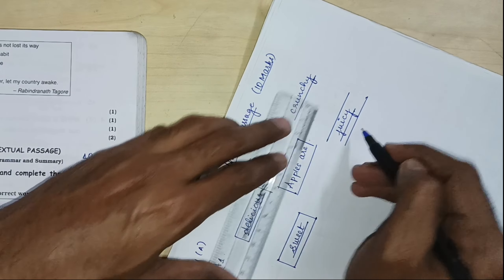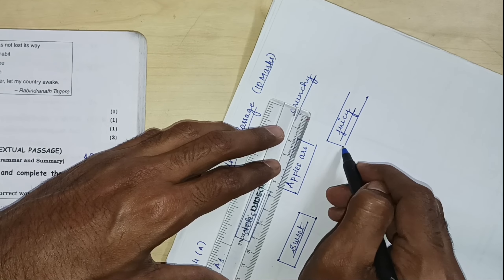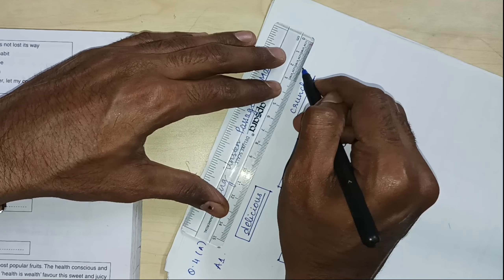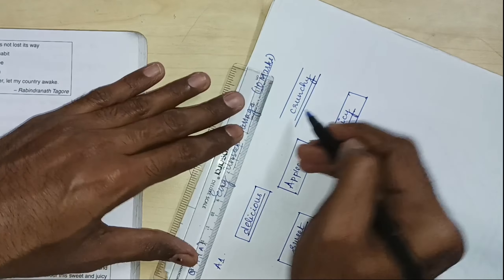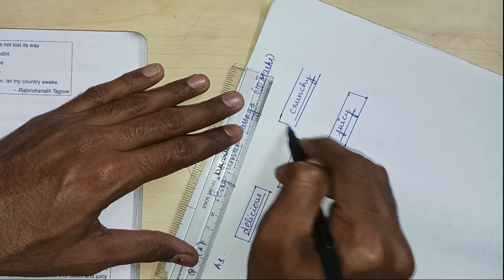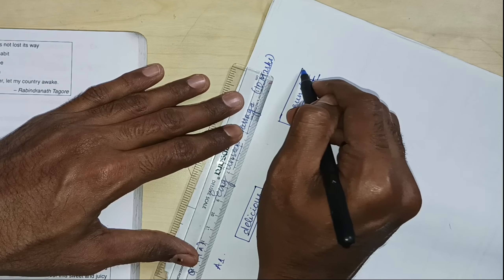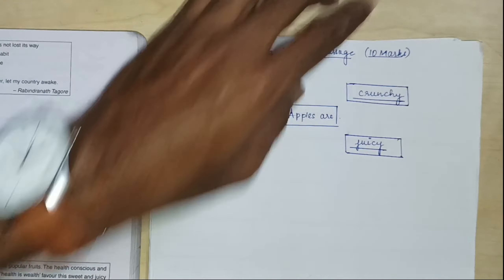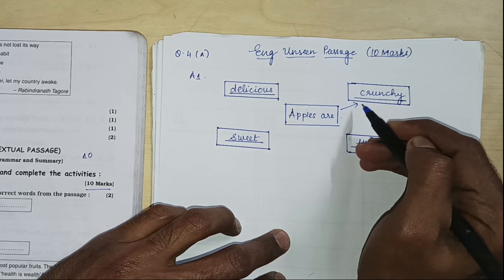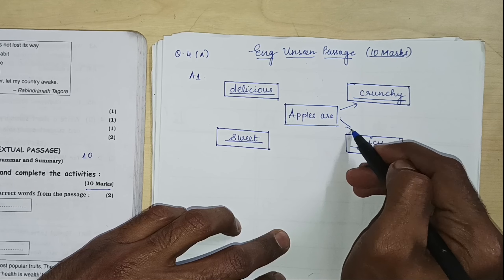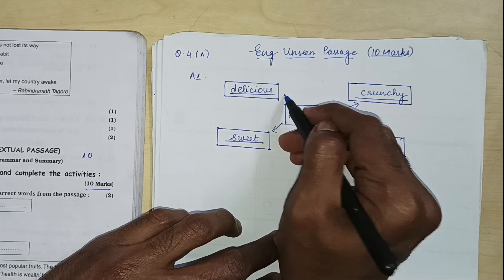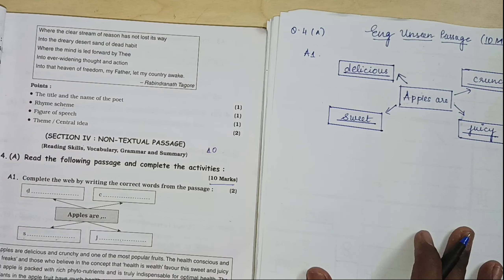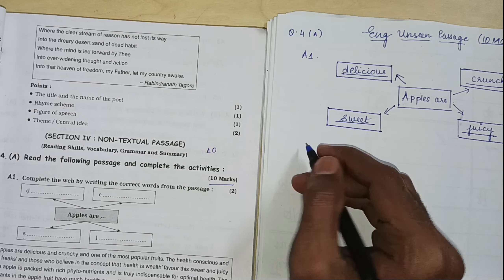The unseen passage can be in English, Hindi, or Marathi. The very best thing about this passage is that it is very easy to find the answers. And it carries 10 marks — which is a great opportunity to gain 2 percentage points in your overall score.